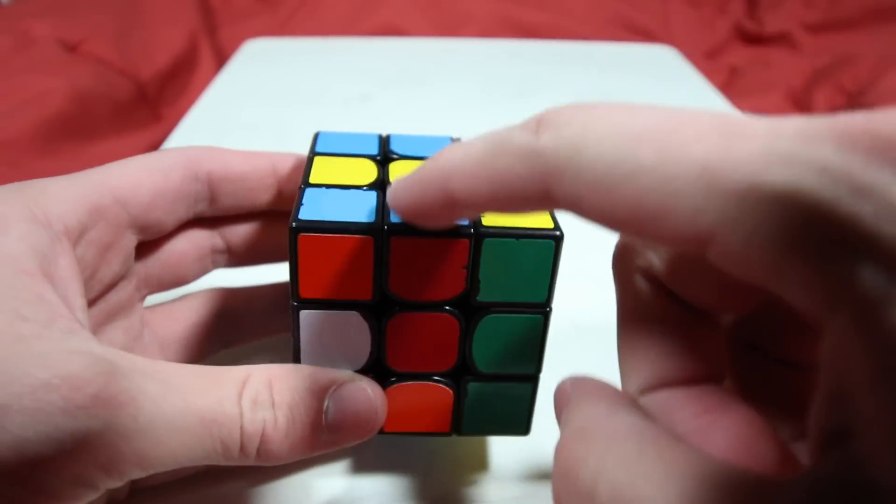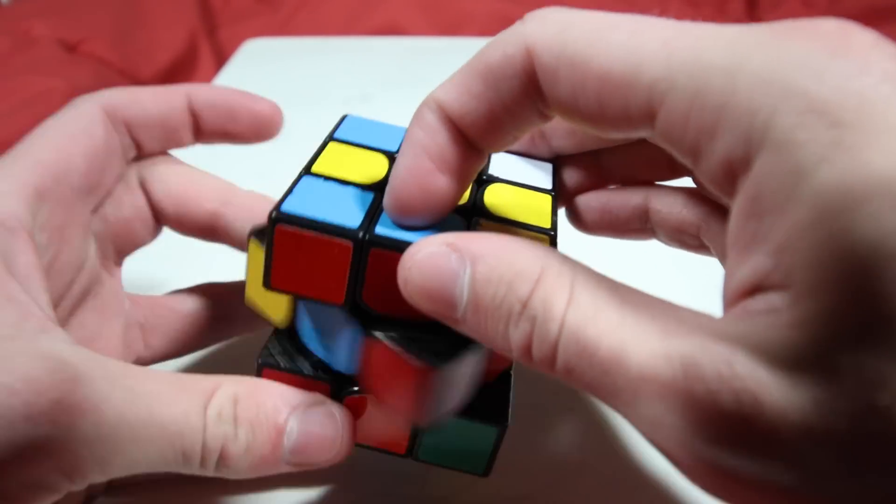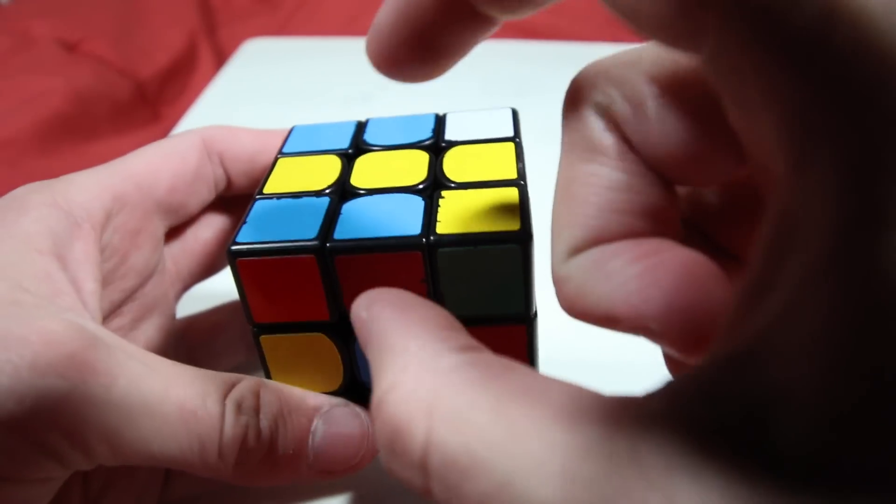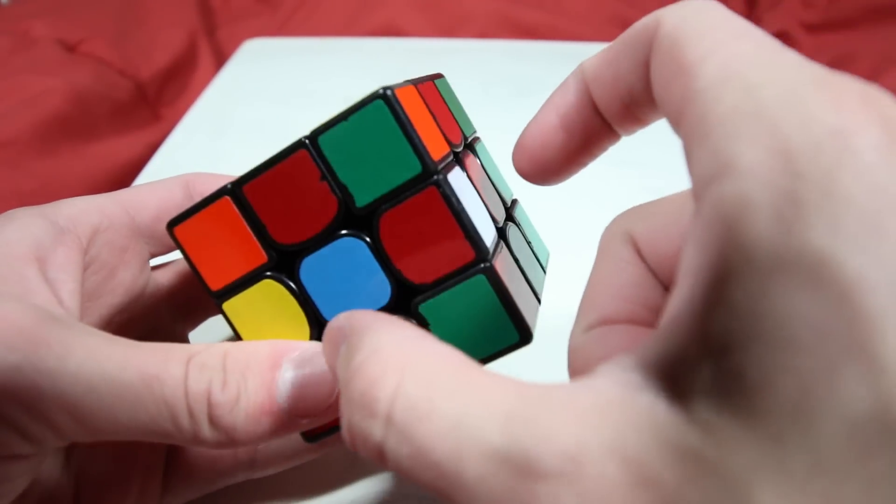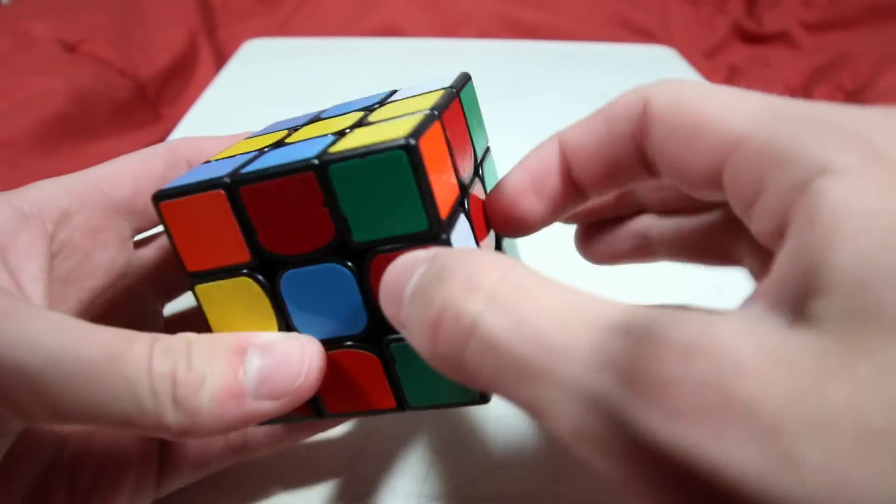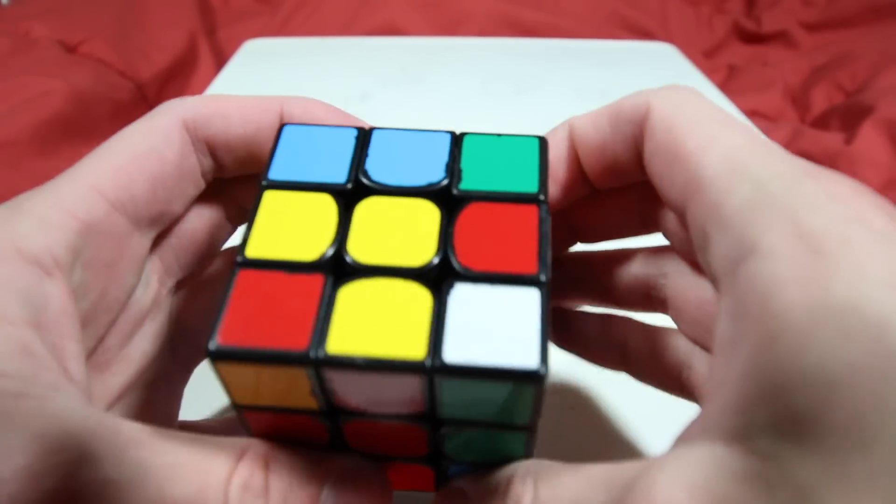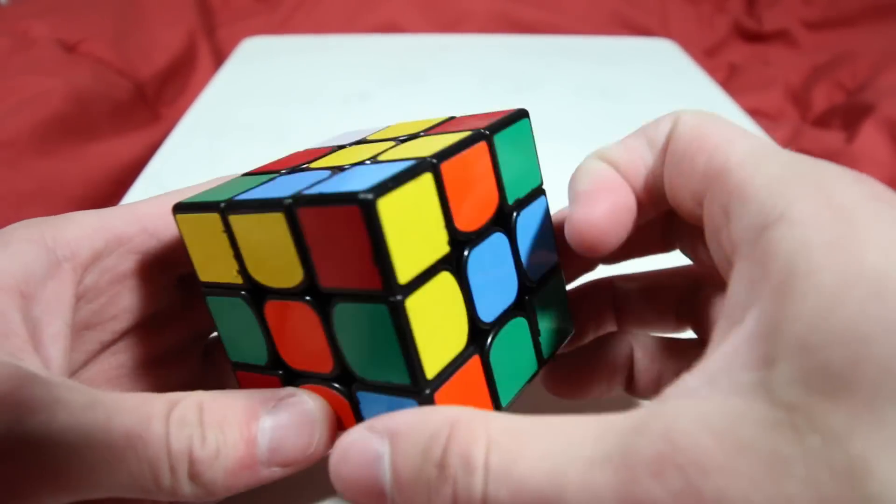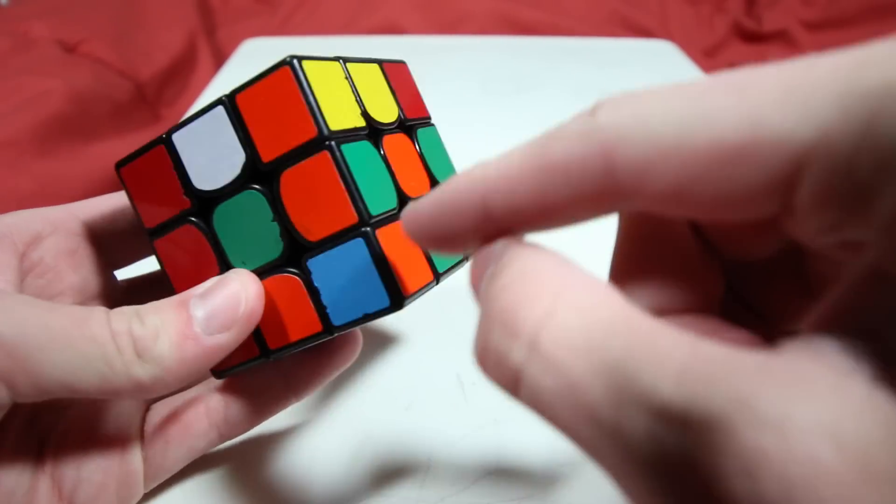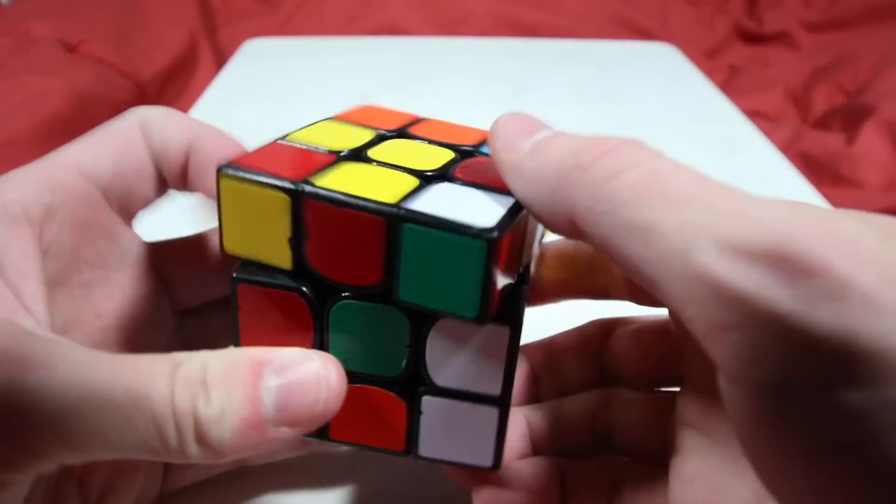So the next step is to use keyhole to fill in the E layer. So you just do that by finding any edge that doesn't have yellow or white in it, positioning it in the UF spot, finding the two centers it goes between putting them on the right, and then inserting it with an R U' R' or an RW U R' and you can show them the difference between those two.